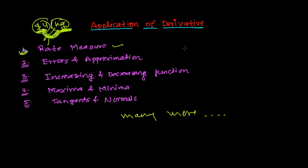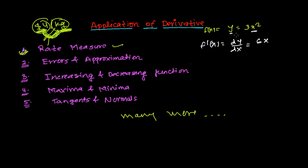Similarly, if two variables are interrelated in a function — say y = 3x² — we can find the derivative. We write f prime of x, or dy/dx, which equals 6x. So what is dy/dx giving us? There are two variables, x and y. If I change x, then y will change. So dy/dx simply tells us the rate of change of y with respect to x.